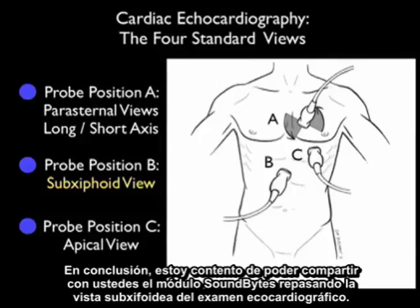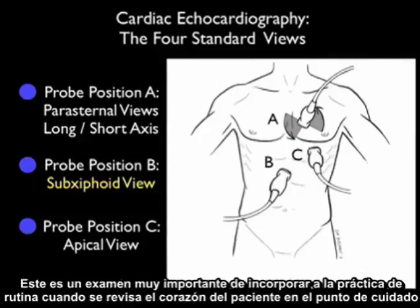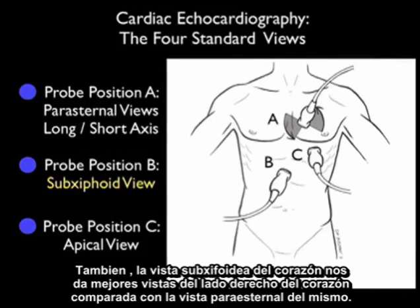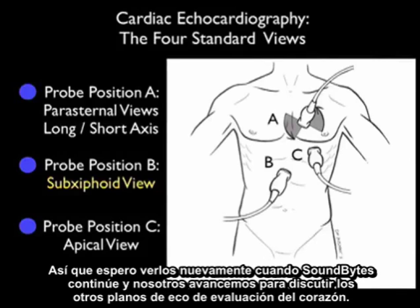In conclusion, I'm glad to share with you this SoundBytes module going over the subxiphoid view of the cardiac echo examination. This is a very important exam to put into your routine practice when looking at your patient's heart at the bedside — it will tell you if the patient has a pericardial effusion as well as giving a sense of left ventricular contractility. Also, the subxiphoid view gives better views of the right side of the heart than the more superior parasternal views. I hope to see you back as SoundBytes continues and we move on to discuss the other echo exam planes of the heart.